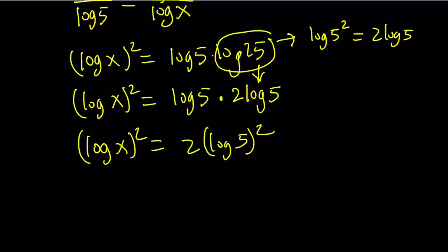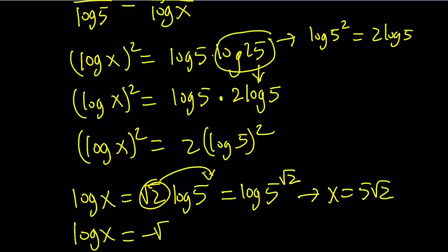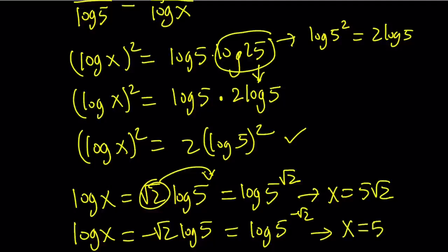From here, either log x is equal to square root of 2 log 5. Which can be written as log 5 to the power of square root of 2. Because this power can be moved back. Power rule works both ways. And now we have log x equals this. So x equals 5 to the power square root of 2. Or if log x is equal to negative root 2 log 5, we're going to get log 5 to the power of negative root 2. And since logs are equal, that means x equals 5 to the power of negative root 2.